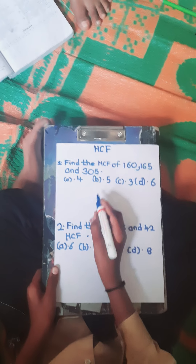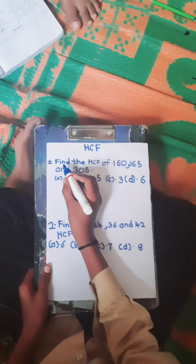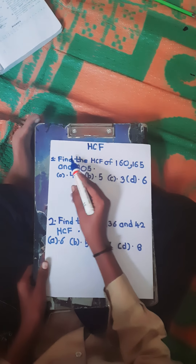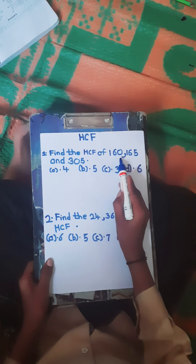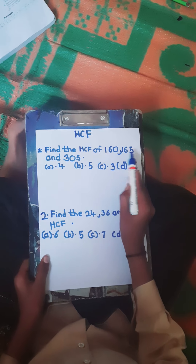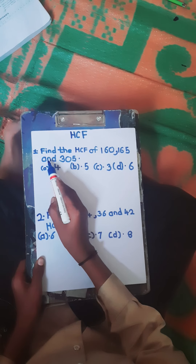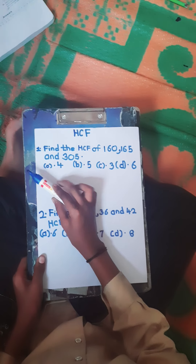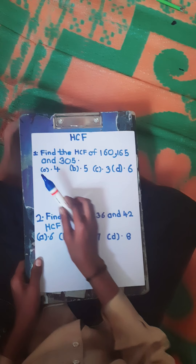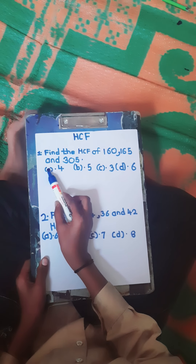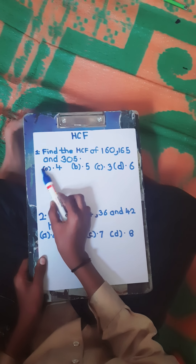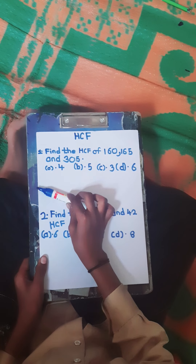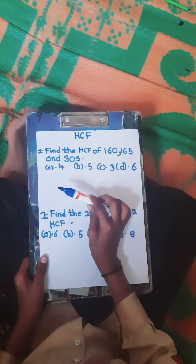Find the HCF of 160, 165, and 305. We will do it with a short trick. You know, if a number divides all the given numbers, that is our answer.